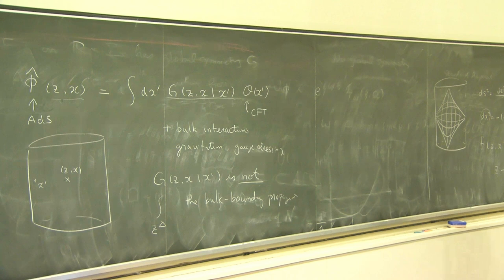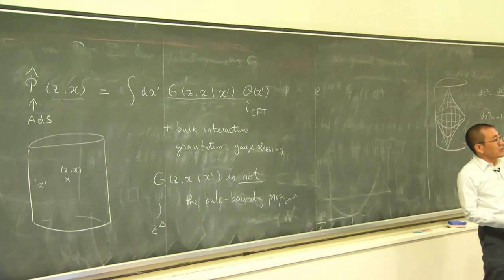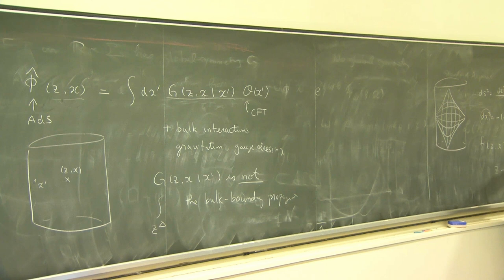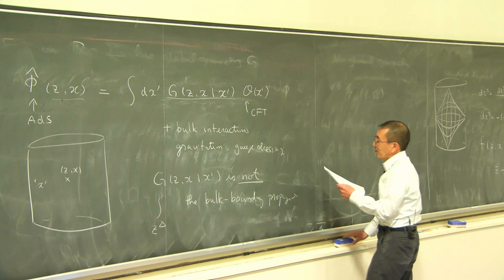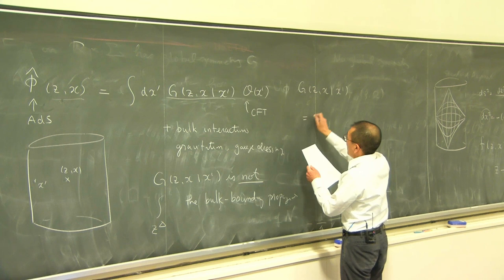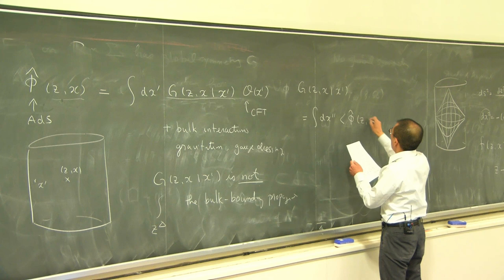This is called the smearing function. In general it is a complicated function, and it is somewhat related to what was discussed earlier this morning. In Euclidean context these are like shadows of each other. In fact the expression for the smearing operator is similar to what was written this morning — you can write G(z, x, x') as an integral over a third point of the correlation function.